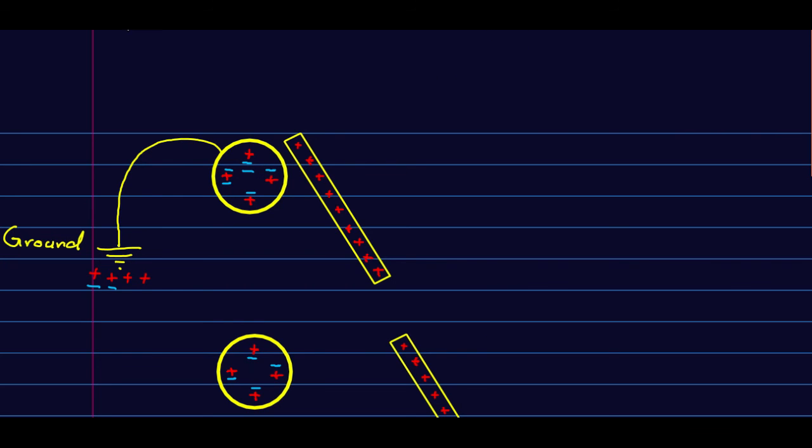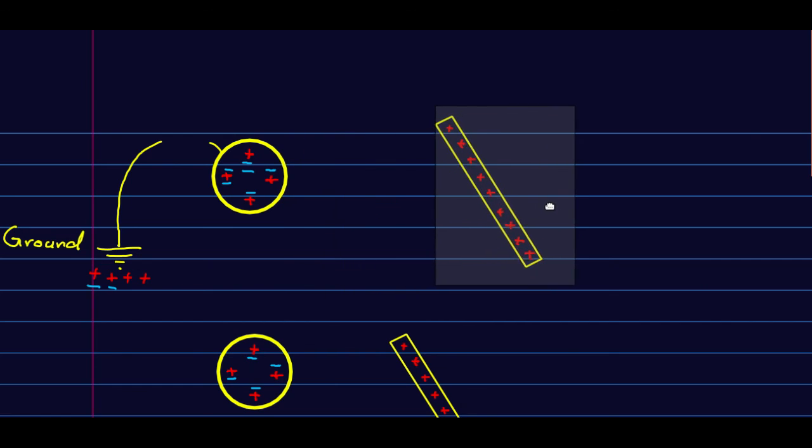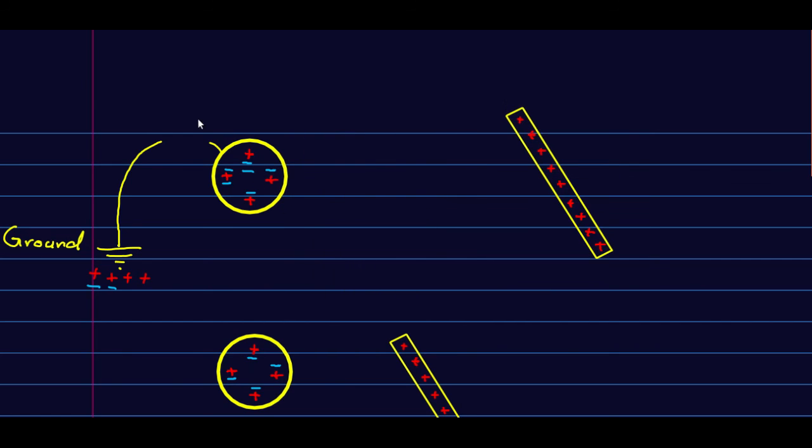Now, if I break the connection, and before the ball can swing over and hit the rod, pull the rod away, I'm left with a negatively charged ball. This is called charging by induction.